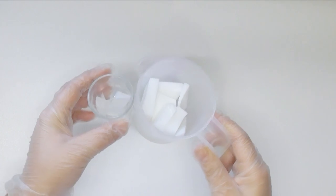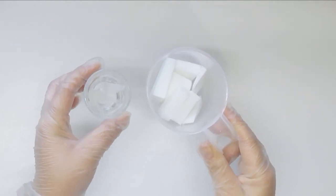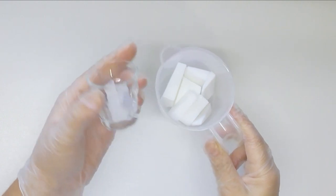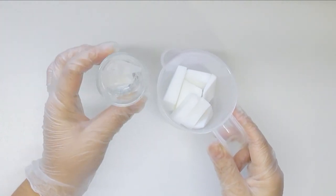Today's soapy embeds are going to be made using melt and pour. I like to use the Stephenson's No Sweat. I'm using some of the white and in this one here I have a little bit of the clear.